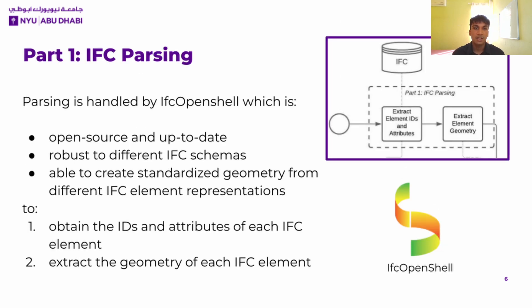Firstly, we have IFC parsing, which was handled using the IFC OpenShell library on Python. IFC OpenShell is an open-source and up-to-date parser, and it is robust to the different IFC schemas, such as IFC 2x3 or IFC 4. It is able to generate standardized geometry for every IFC element representation, which is useful considering that those representations vary a lot between schemas and even within the same file. This is the main reason why we are using IFC OpenShell rather than a custom parser, as dealing with the different representations would be a waste of time when an up-to-date parser is already available. We use IFC OpenShell to obtain the IDs and attributes of each IFC element, and also to extract their geometry in a standardized format.